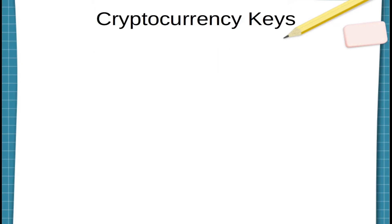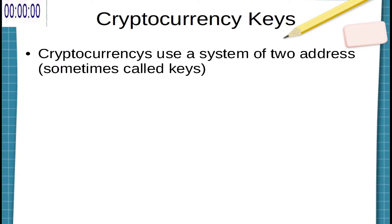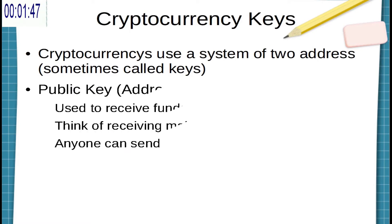Cryptocurrencies are not physical objects, and we can't just hand someone a Bitcoin or hand someone an Ethereum cryptocurrency. Rather, cryptocurrency works on the blockchain, and it uses a system of two addresses that are sometimes called keys to move value around on this digital blockchain.